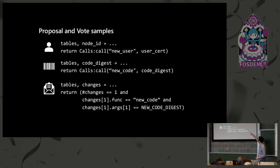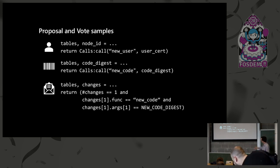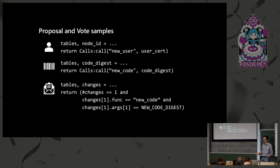A ballot to evaluate a new code proposal looks at the changes proposed: it checks there's only one change, that it's a new code proposal, and that the new code is a code ID that has been decided as acceptable. Typically, a member would communicate ahead of time with other members, share what they need to reproduce the build, and the other members reproduce the build, get to the same hash over the code, and then vote for that specific code ID — not accepting the proposal itself, but accepting that particular code ID.